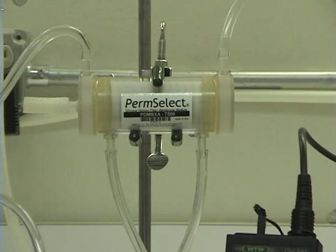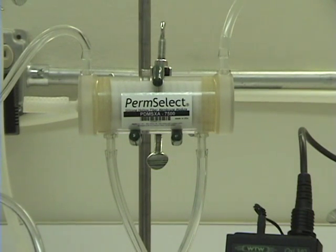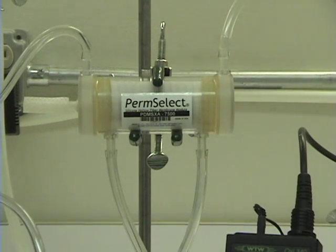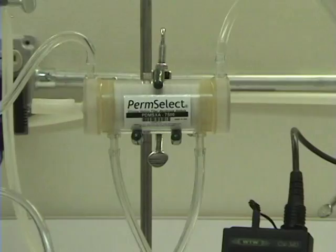This video demonstrates how easy and straightforward it is to degas your liquid stream using a PermSelect membrane module. Shown here is a PDMS XA-7500 module with a surface area of 0.75 meters square.